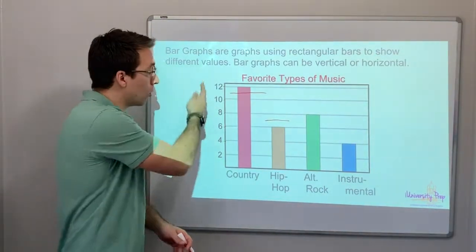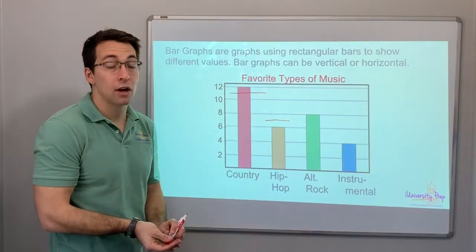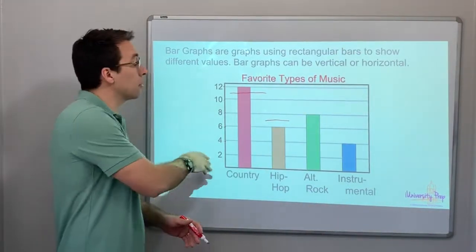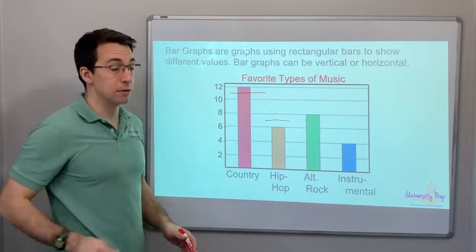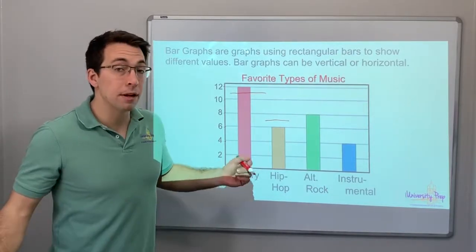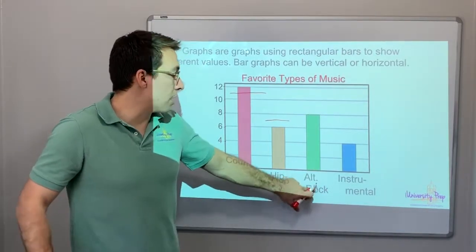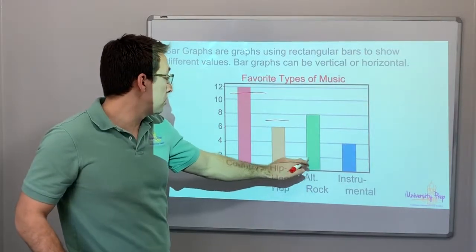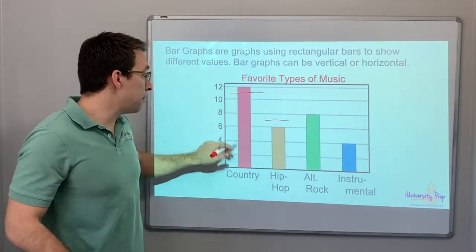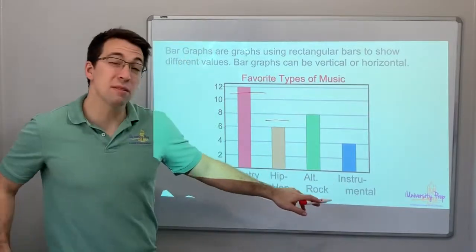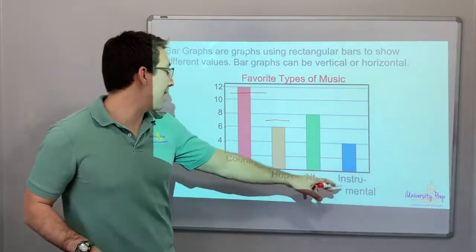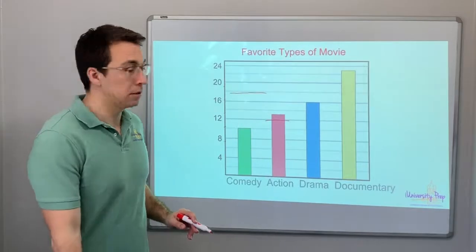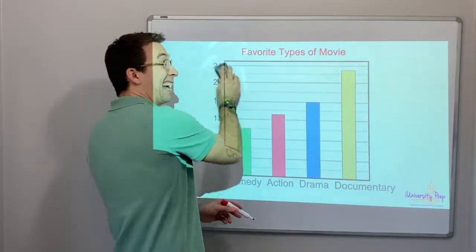You have to look at the y-axis or x-axis and determine what the scale is — what increments this bar graph is measuring by. How many people liked alt rock? Let's see: 2, 4, 6, 8 — eight people. Instrumental music — music without words — only four people liked instrumental music.